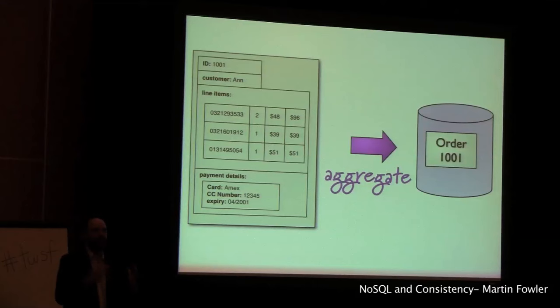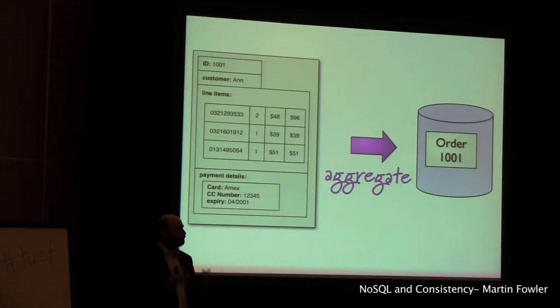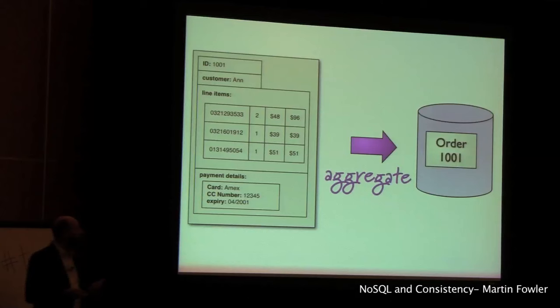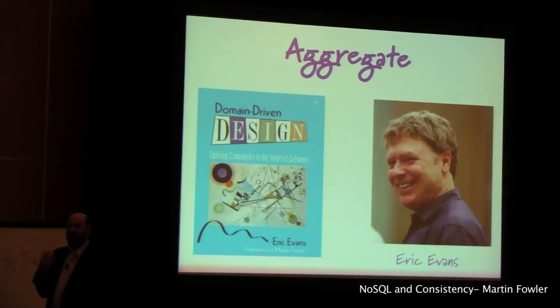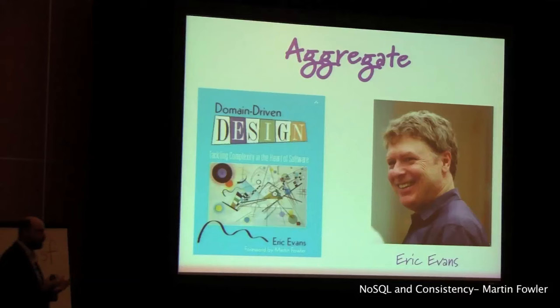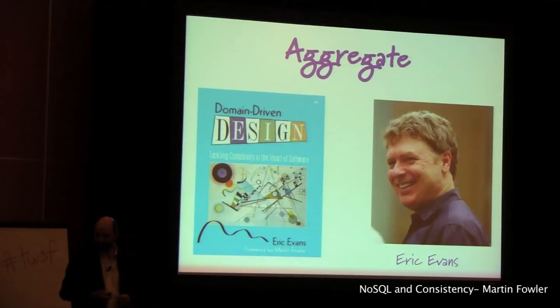While this doesn't eliminate consistency problems like dirty reads entirely, it does reduce the issue because you're storing whole things. The term I use for this is an 'aggregate' — these logical clumps of data that we tend to think of in a certain context, and we store that whole aggregate back in the database. I use the term aggregate because it comes from Eric Evans' book 'Domain Driven Design,' where he talks about the value of trying to work out what the aggregates are and thinking in terms of those aggregates.